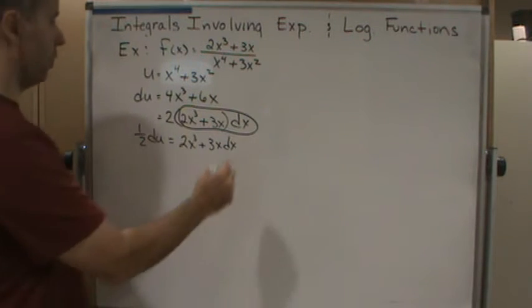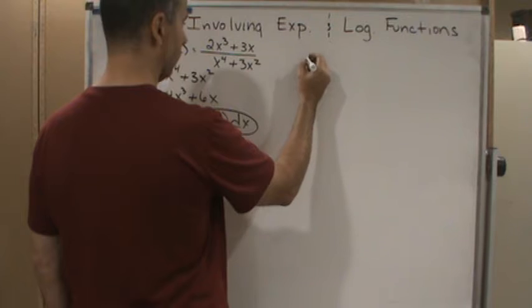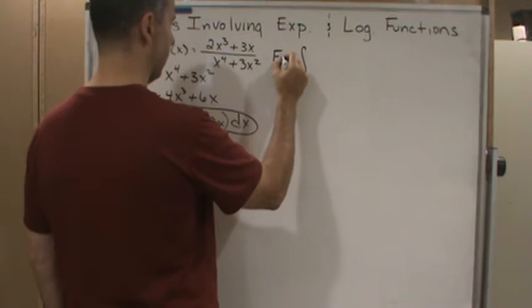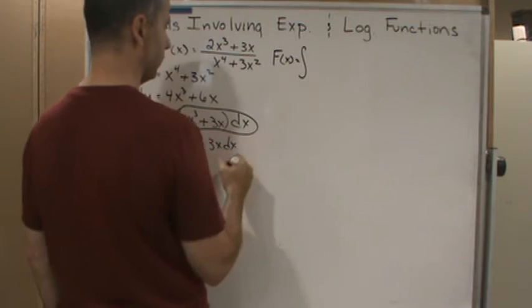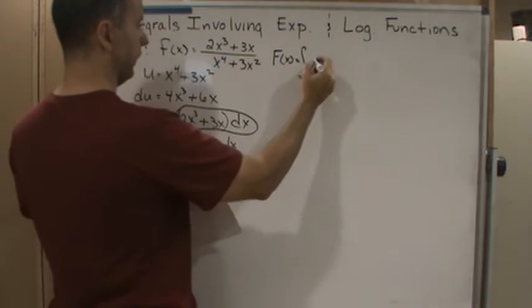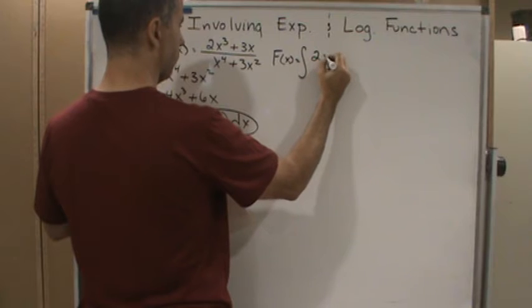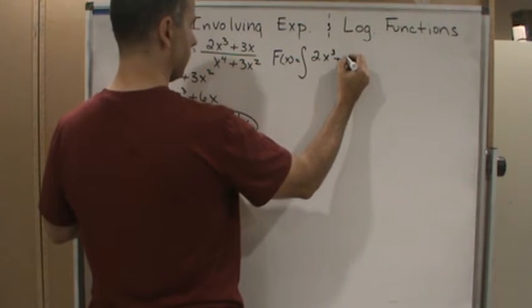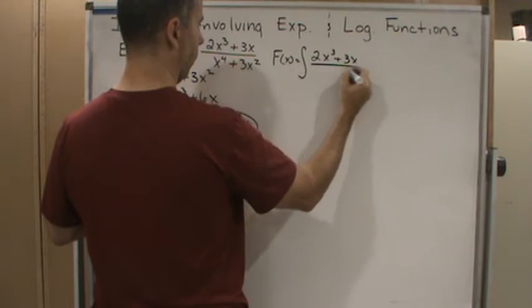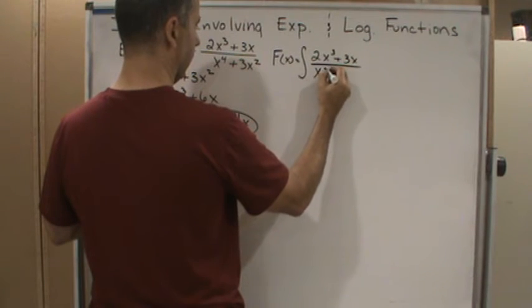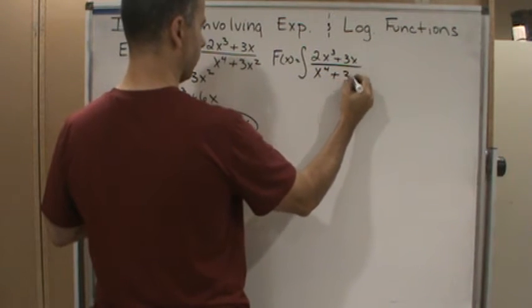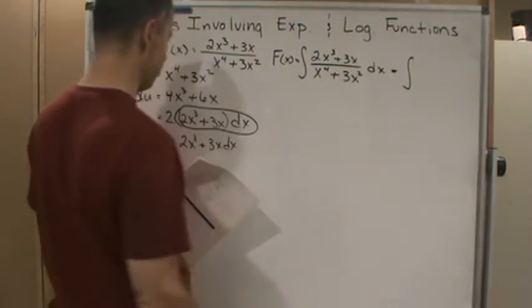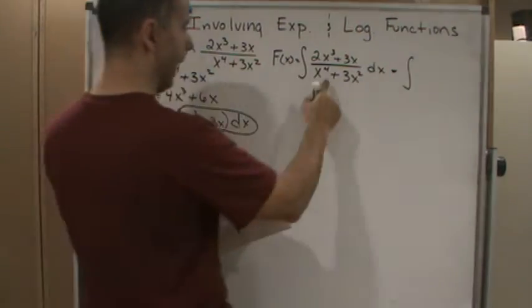Okay, so now if I set up my integral, the antiderivative capital F of x equals the integral of 2x cubed plus 3x over x to the fourth plus 3x squared dx. Now my u substitution then becomes, well my u is the bottom.